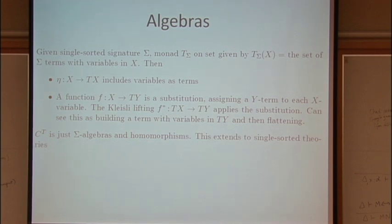Then C of T is exactly the sigma algebras and homomorphisms that you know before. And this extends to the case where there are equations on there, so you take this thing to be terms modulo the equations.